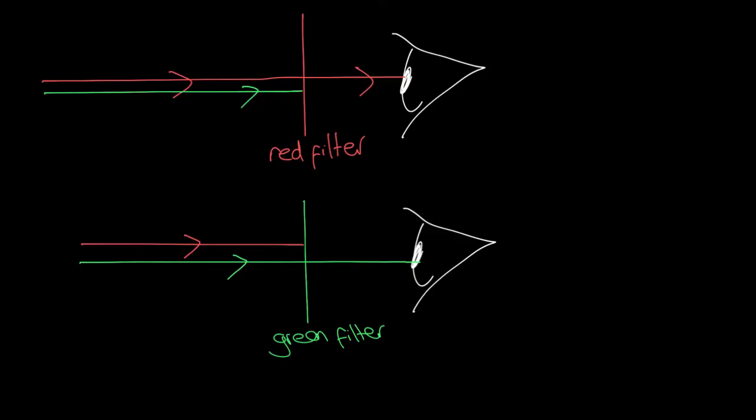In summary, when red light comes from the red writing and it reaches the red filter, it will pass through and go into the eye of the person looking through the red filter, so they'll see the red writing. But when the green light comes from the green writing and hits the red filter, it will be absorbed, and so it will not be seen by the person looking through the red filter.